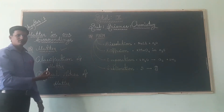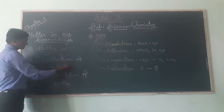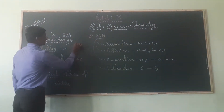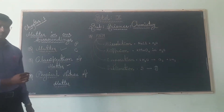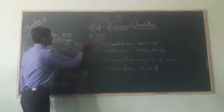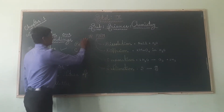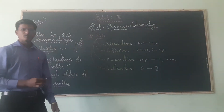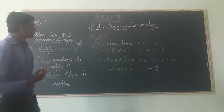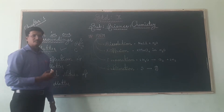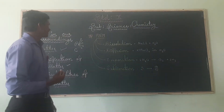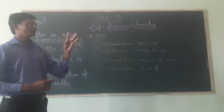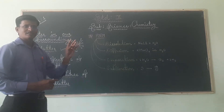In our previous video, we also discussed the classification of matter — the physical and chemical properties of matter. We discussed the five states of physical matter: solid, liquid, gas, plasma, and BEC, that is Bose-Einstein Condensate. These five stages we have already completed.